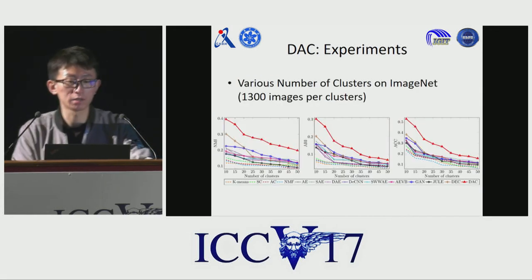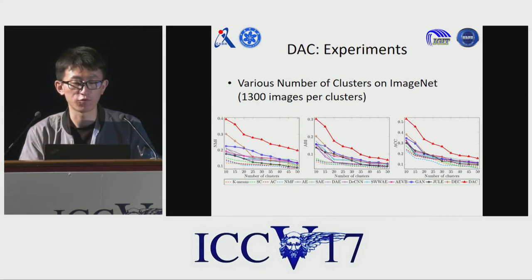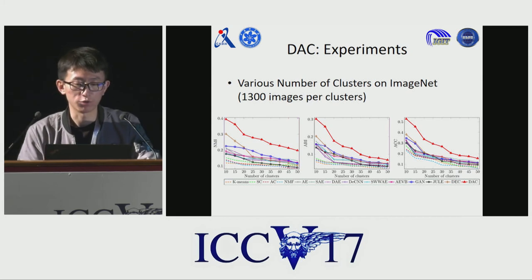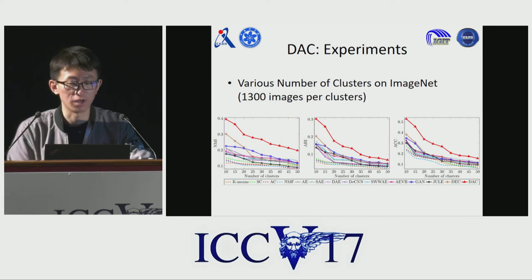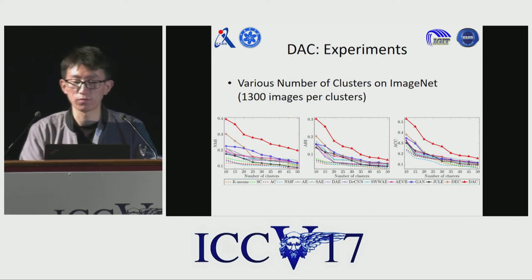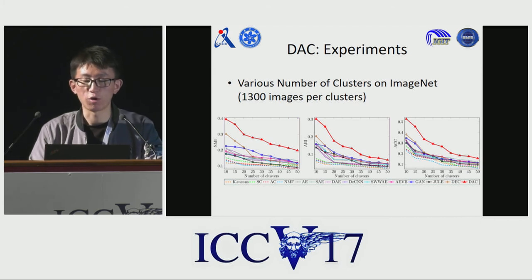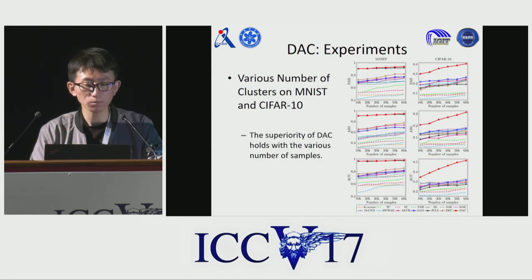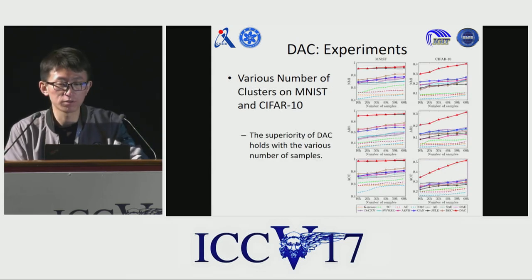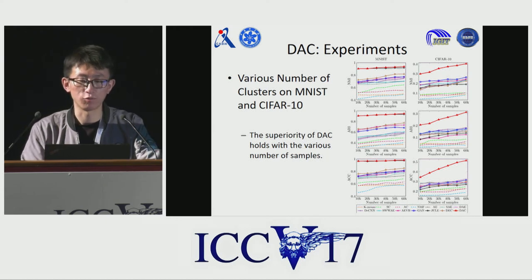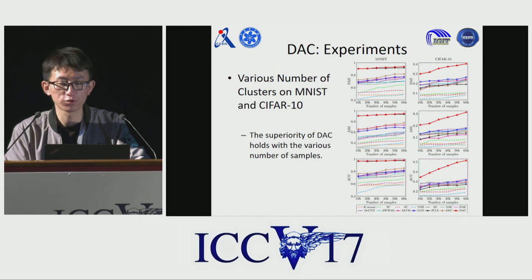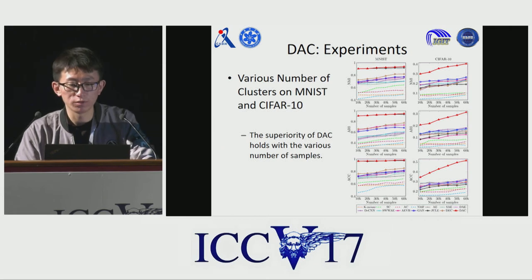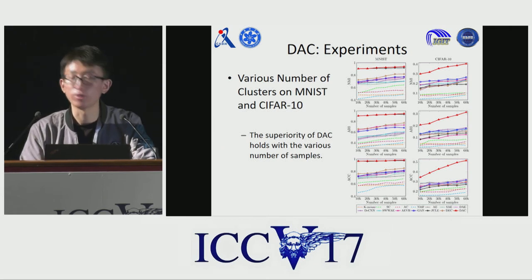We conduct an experiment on the ImageNet dataset with different numbers of clusters. As the number of clusters increases, all the methods generally degrade. This is because more uncertainty is introduced as the number of clusters increases. However, contrary to other methods, the superiority of our method still holds with different numbers of clusters. We also test the performance of the clustering methods on MNIST and STL-10 with different numbers of samples. The figure shows that the performance of most methods improves with more samples, indicating that more samples are beneficial for clustering.